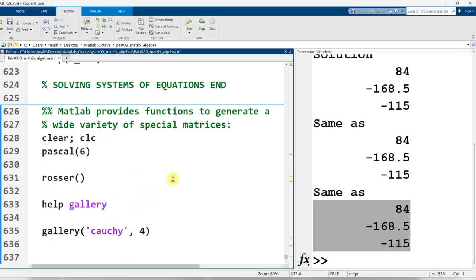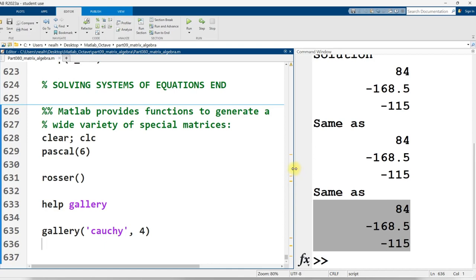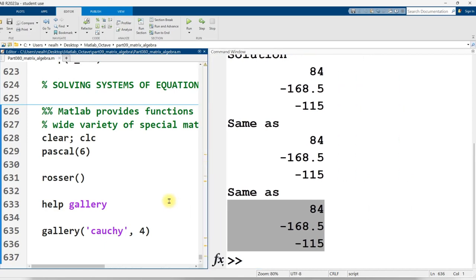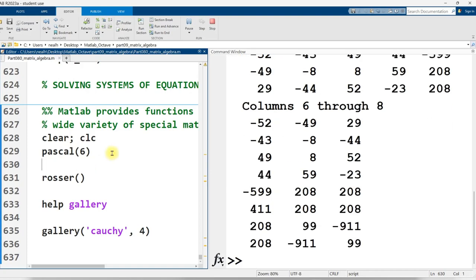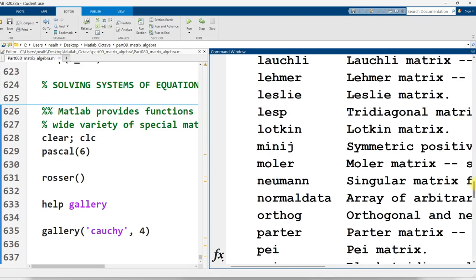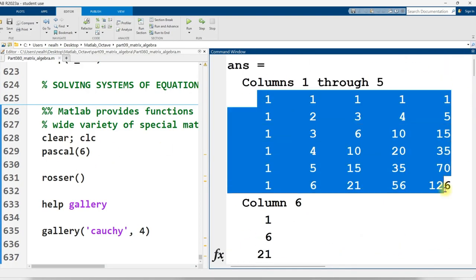Basically, any sort of special matrix that you can think of that you might need to use in some sort of calculation, you should ask yourself, hey, does MATLAB have something like that that I can just refer to? It probably does. So Pascal 6 right here will generate a Pascal's triangle matrix. I have it right up the top here.